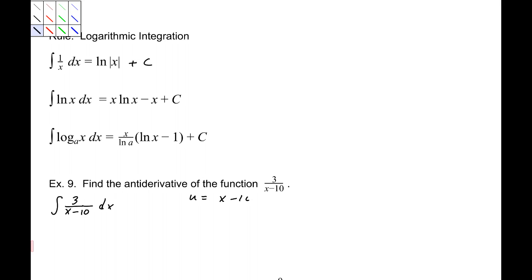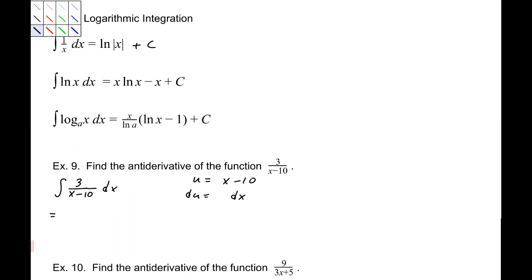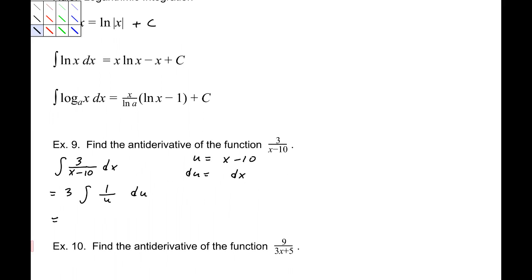So u is x minus 10, which makes du 1 dx. So let's go ahead and I'm going to factor the 3, that constant out of here, and make it 1 over u du. Well, from our equation right up there, that is 3 natural log of the absolute value of u plus c. And because u here is x minus 10, that is 3 natural log of x minus 10 plus c.